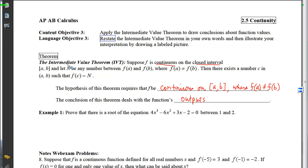In order to use the Intermediate Value Theorem, I need f to be continuous on a closed interval. So we're going to be looking for a closed interval from 1 to 2, and we want f, which is this expression, to be continuous.